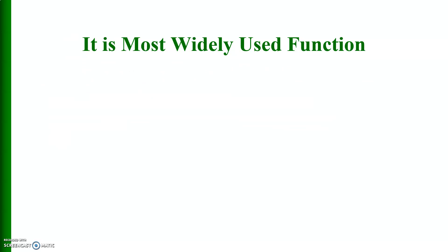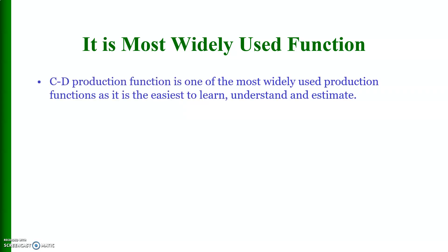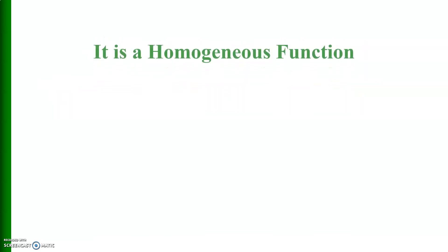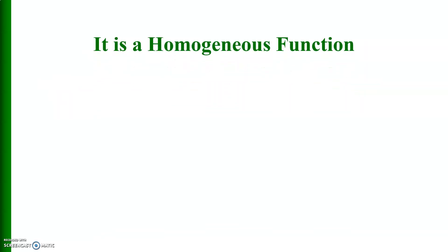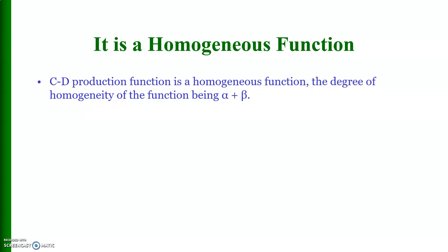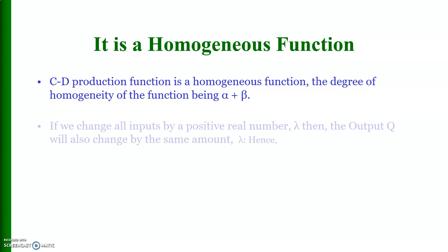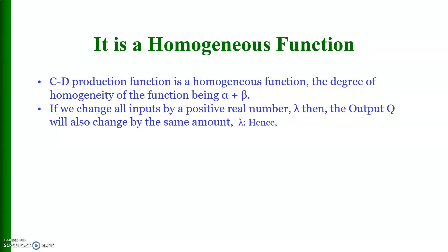Some characteristics of the Cobb-Douglas production function: it is one of the most widely used production functions as it is the easiest to learn, understand, and estimate. It is a homogeneous function, with the degree of homogeneity being alpha plus beta. If we change all inputs by a positive real number lambda, then output Q will also change by the same amount lambda. Hence, if we multiply each input by lambda, the output will be increased by lambda^(α+β) · Q.